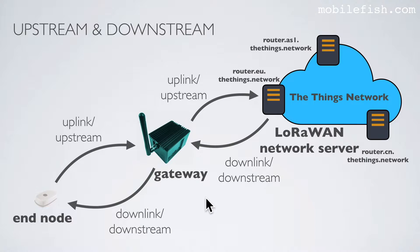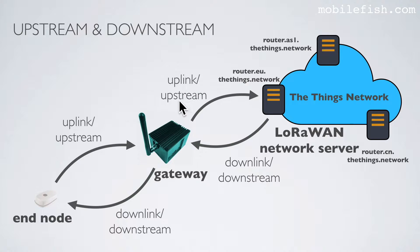This is just a reminder. If we send data from end node to gateway, it is called an uplink or upstream. If we send data from the gateway to a LoRaWAN network server, it is also called an uplink or upstream. The other way around: if we send data from the LoRaWAN network server to the gateway, it is called a downlink or downstream.